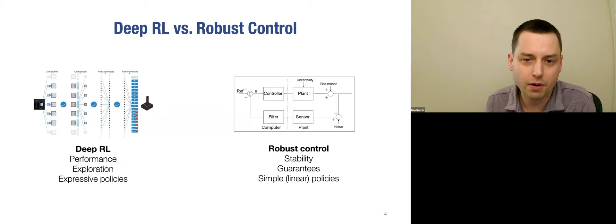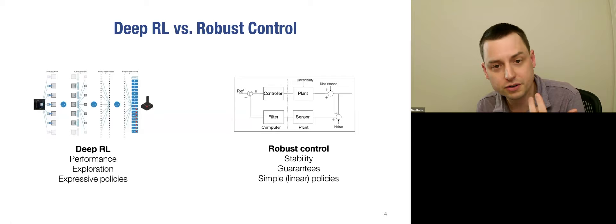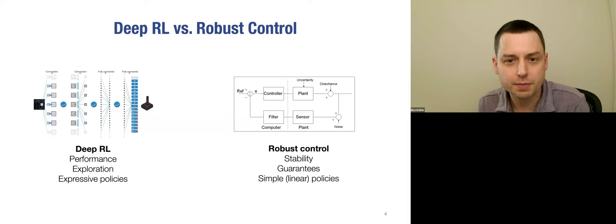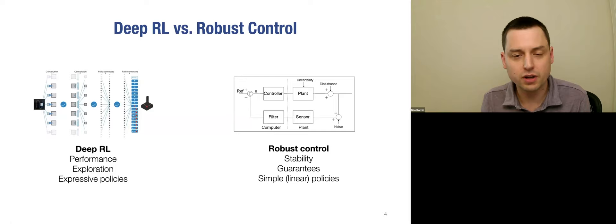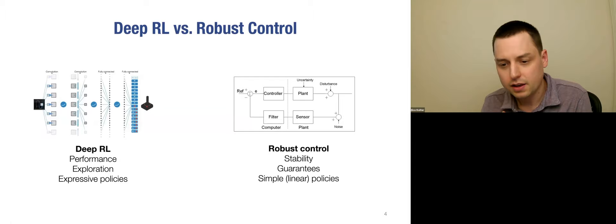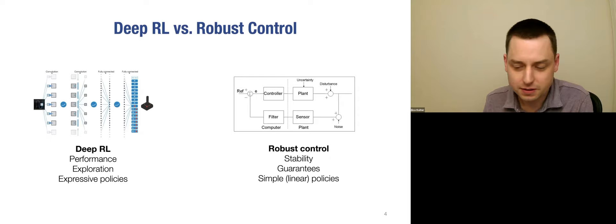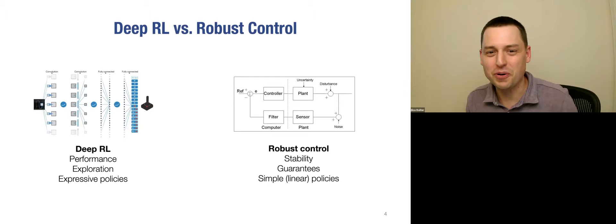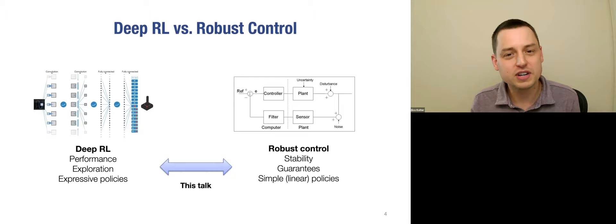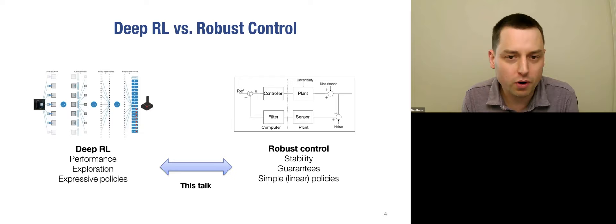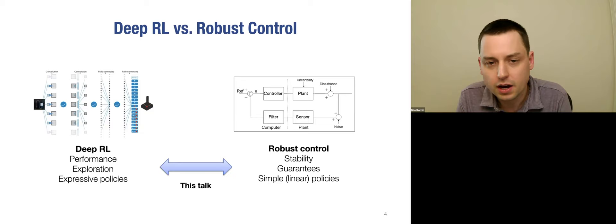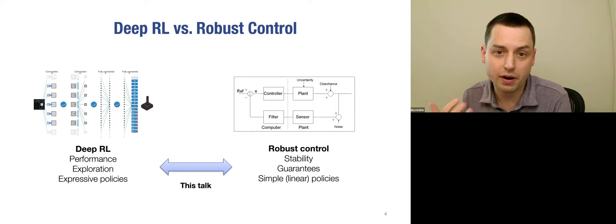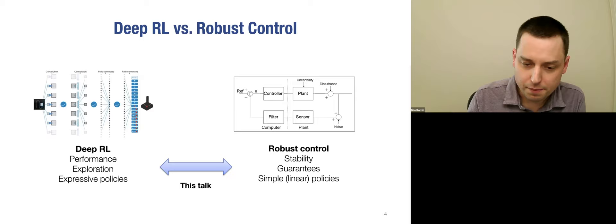Deep RL is also about very expressive policies — rich classes of controllers that can express very complex control laws to get the best expected performance — but typically they don't come with things like stability guarantees. Robust control, on the other hand, is all about stability and guarantees under bounded uncertainty assumptions, but with much simpler policies, typically linear. This talk is about trying to bridge these two worlds, capturing some aspects of robust control generically in the context of deep RL systems.